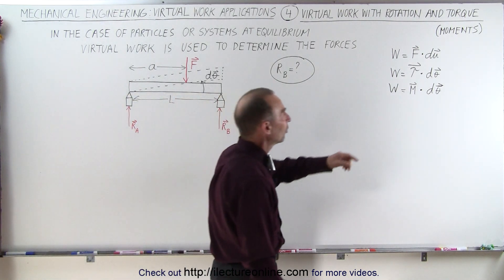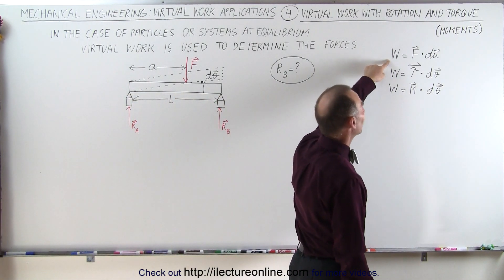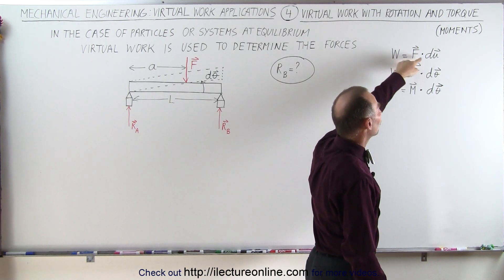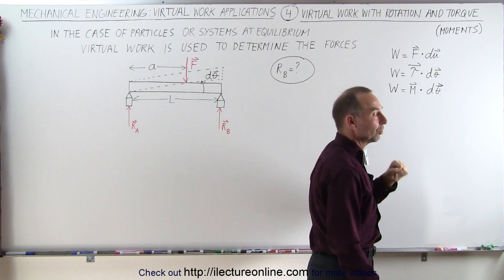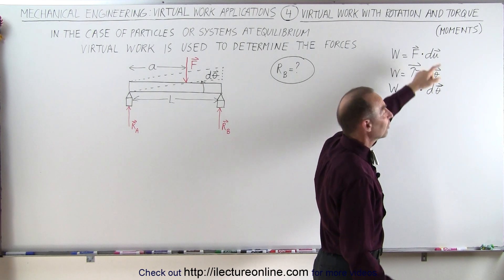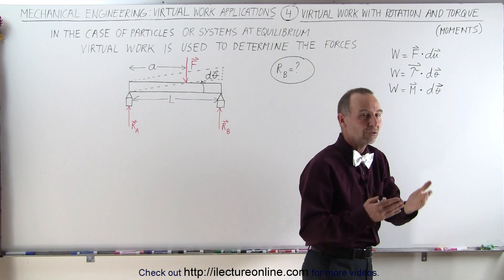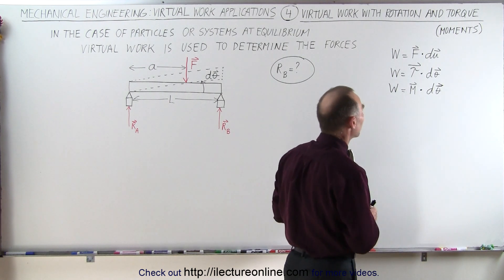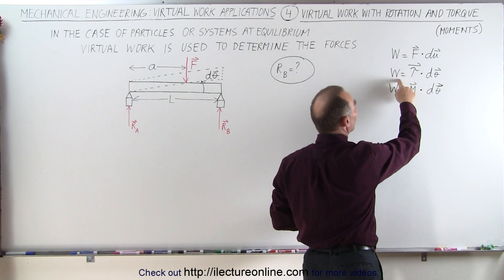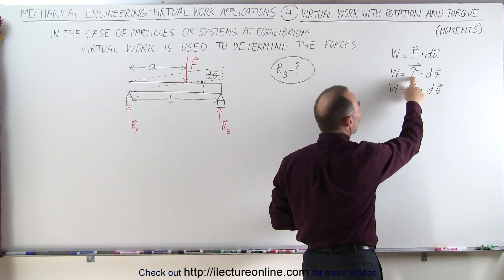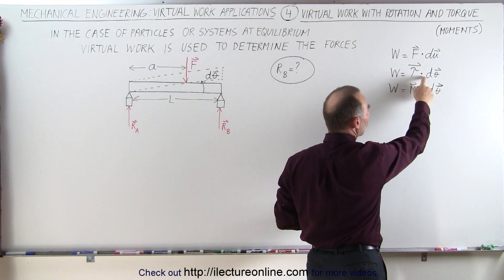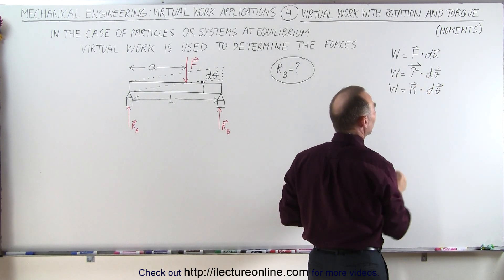In the linear sense, to find the work done, we have to multiply via a dot product the force times the small displacement. This is the magnitude of the force times the magnitude of the displacement times the cosine of the angle between the two. We can also find the rotational equivalent of work done by taking the torque acting on an object and multiplying it via the dot product with the angular displacement.